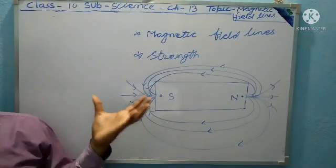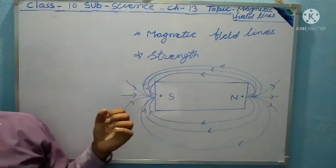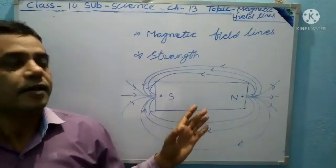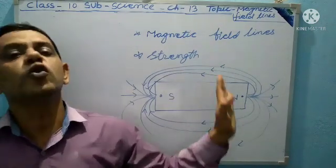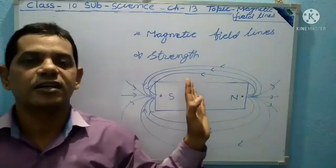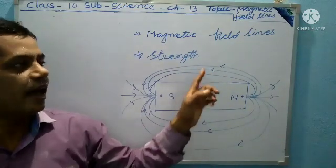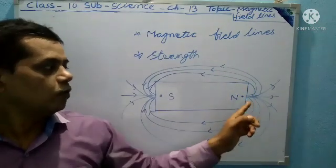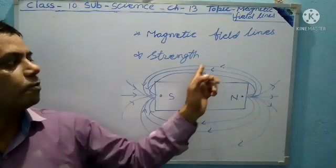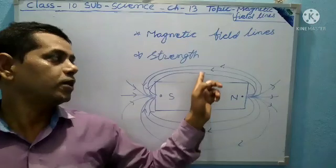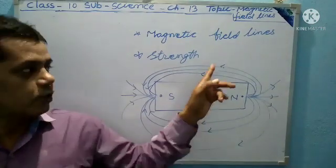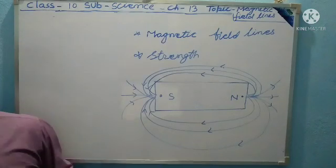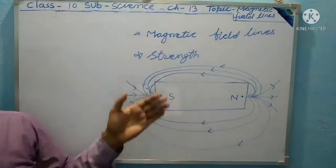The magnetic field lines are closer to each other but do not intersect each other. Each line is separate, moving from North to South pole, but they do not cross each other. Each field line is separate.